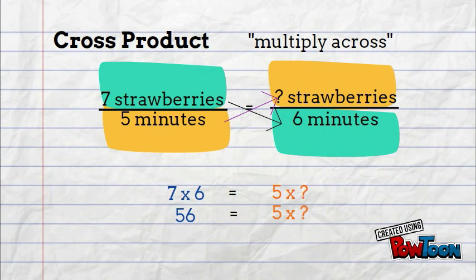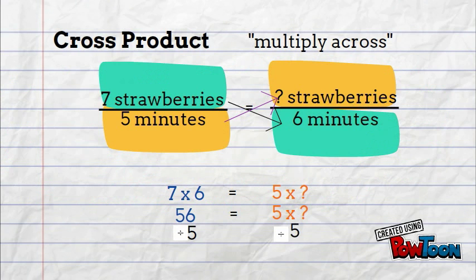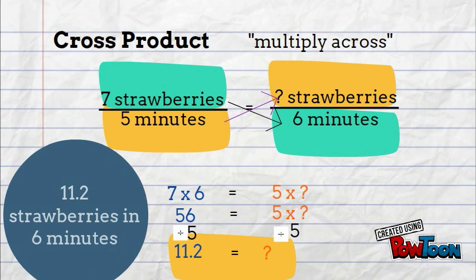We'll start by doing the math that we can. 7 times 6 is 56. Now, we need to figure out 5 times what equals 56. To do that, we're going to do the inverse, or opposite. We'll divide 56 by 5, which gets us 11.2. So you can eat 11.2 strawberries in 6 minutes.